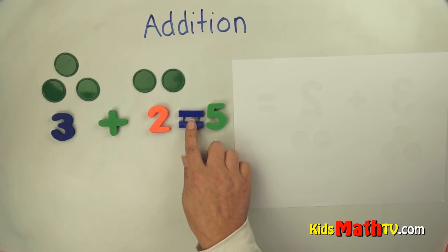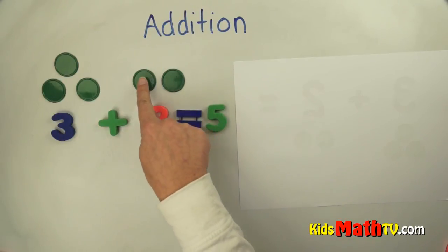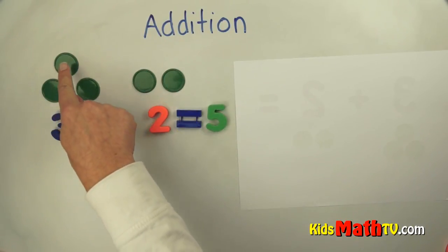Three plus two equals, or is, five altogether. One, two, three, four, five.